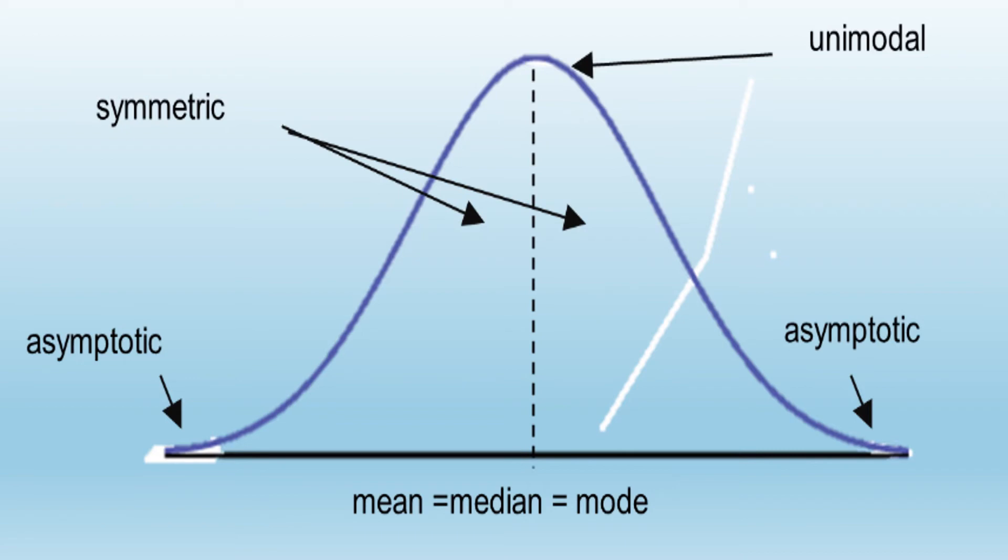Based on the fifth characteristic, the normal curve approaches the horizontal axis on both directions but it will never touch the horizontal axis.